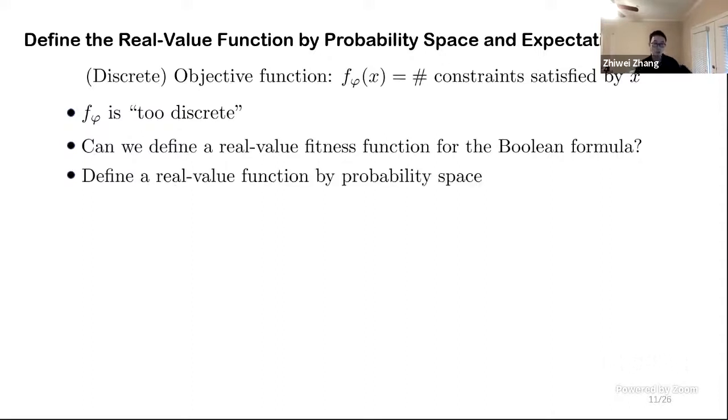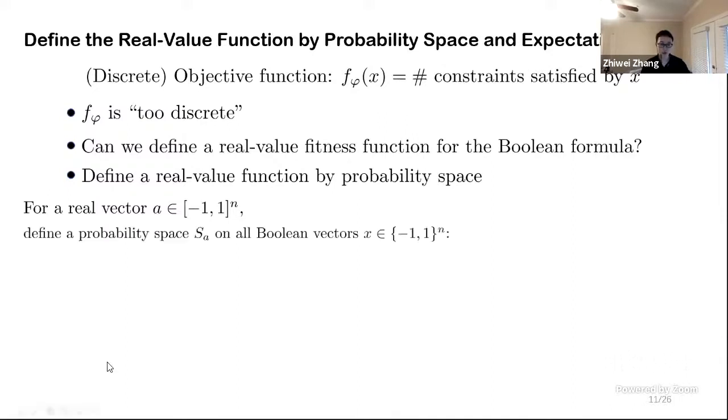Can we define a real value fitness function for the Boolean formula? Usually, one of the ways people do it is to define a real value function by probability space. Here is how we do it. We want to define a fitness real value function for all the real vectors which are constrained in the Boolean box from minus one to one. So we can define a probability space based on the real vector A. The probability space will be applied on all the Boolean vectors.